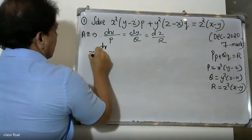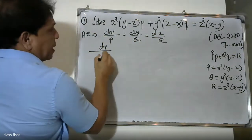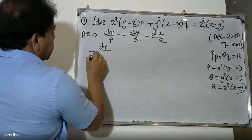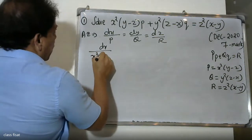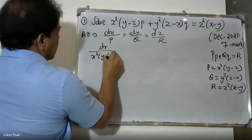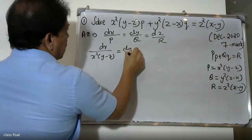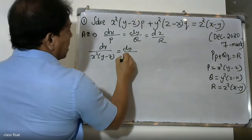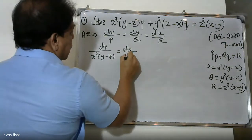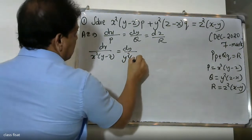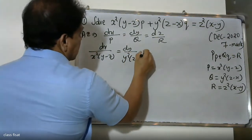We set up the auxiliary equations: dx by P equals dy by Q equals dz by R. That is, dx divided by x squared into (y minus z), equals dy divided by y squared into (z minus x), equals dz divided by z squared into (x minus y).